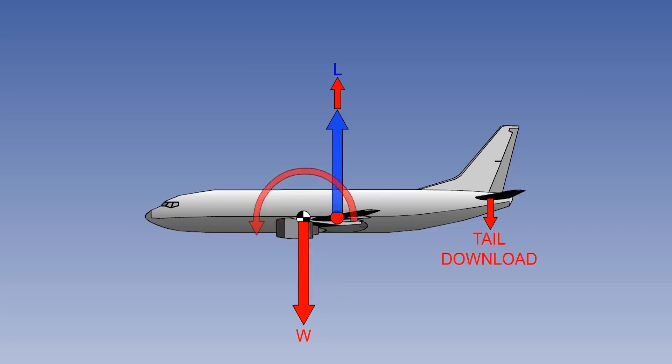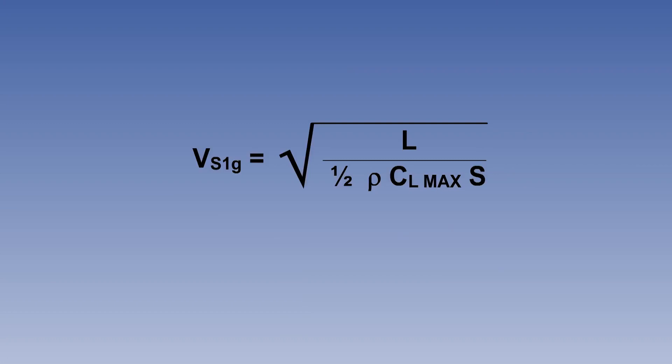If the CG is further forward, it will produce a greater pitching moment, which must be balanced by a greater downforce from the tail plane. This, in turn, requires more lift to counter the downforce. From the 1G stall formula, you can see that greater lift gives a higher stalling speed, with the conclusion that forward movement of the CG increases the stalling speed.